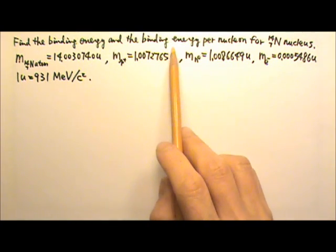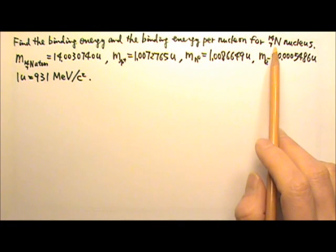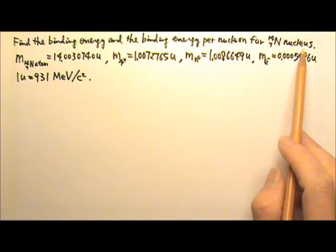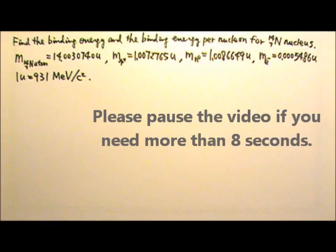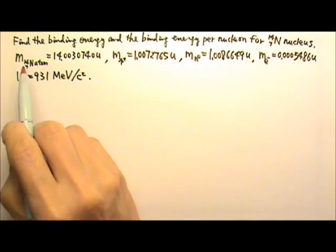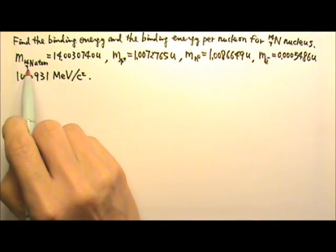Find the binding energy and the binding energy per nucleon for the nitrogen 14-7 nucleus. Because we are given the mass of the nitrogen atom, so we have to start with the nitrogen atom.